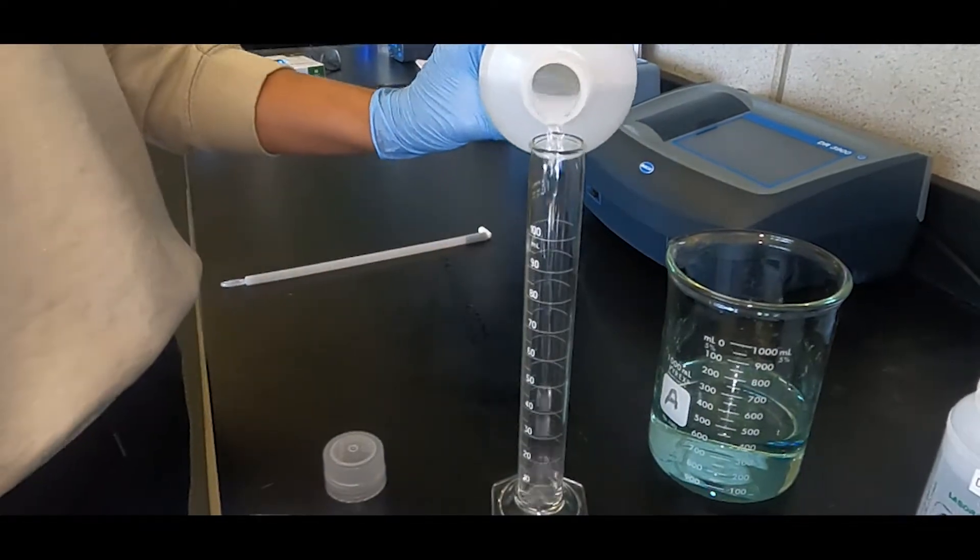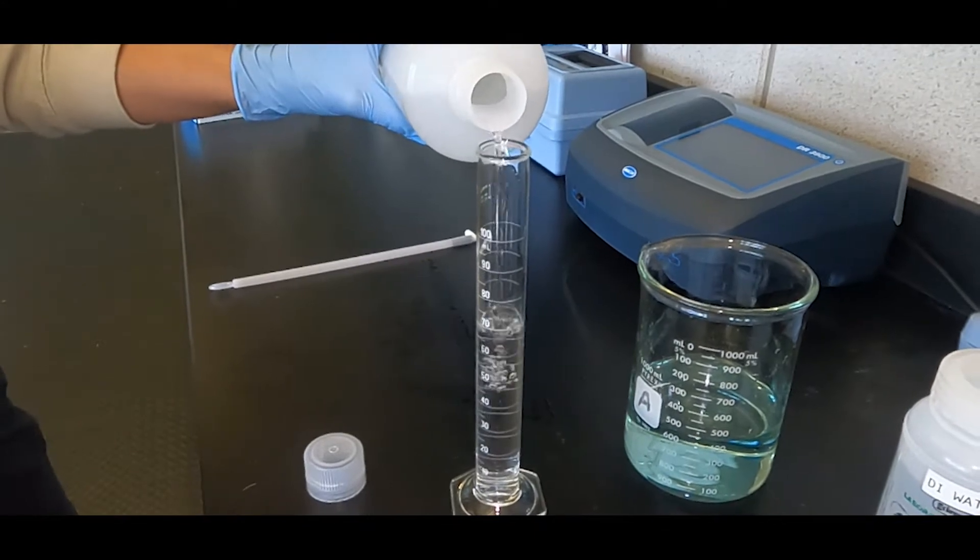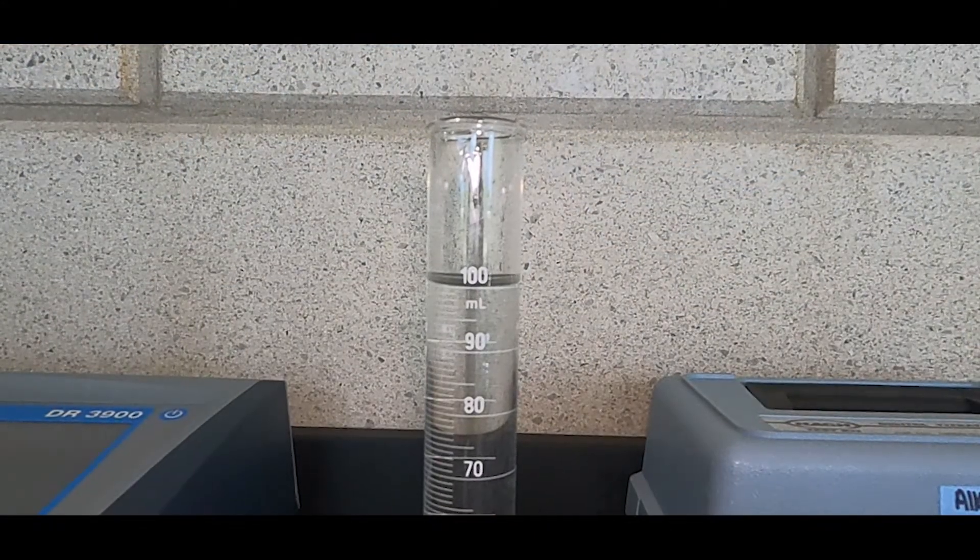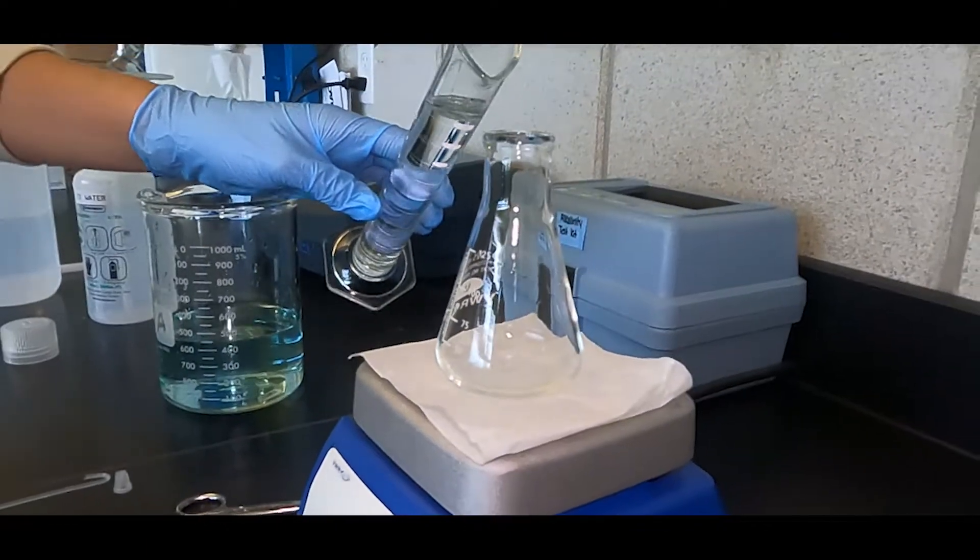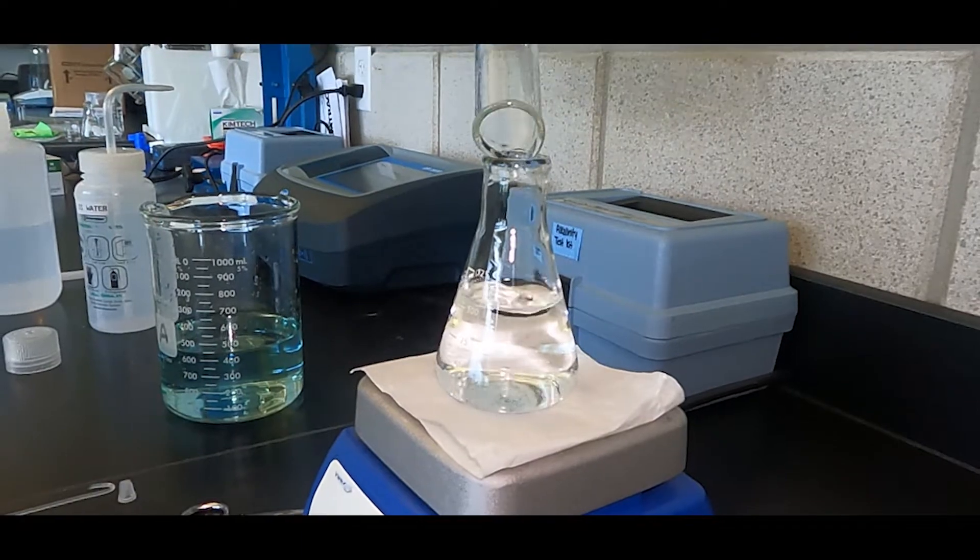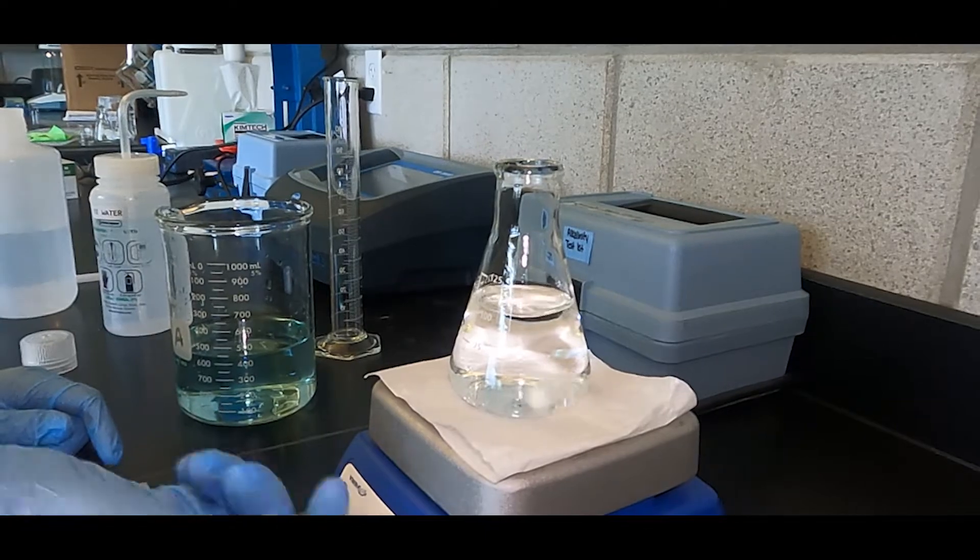If the sample volume given in the table is less than 100 milliliters, top the cylinder up to 100 milliliters using deionized water. Pour the sample into an Erlenmeyer flask and add a stir bar. Place on a stir plate and begin stirring the sample.